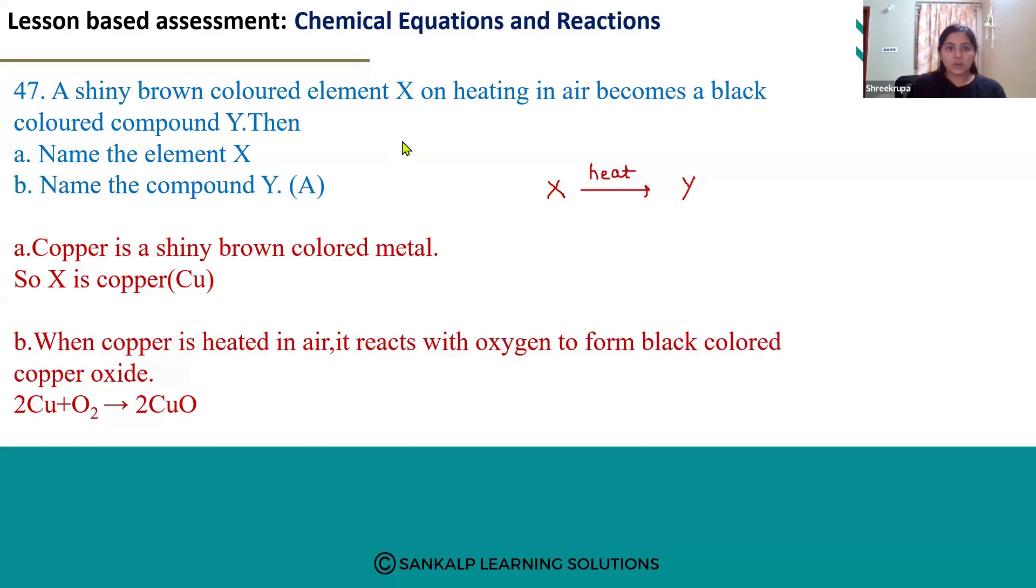They are saying X is a shiny brown colored element, and shiny brown colored element is copper.